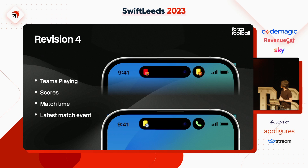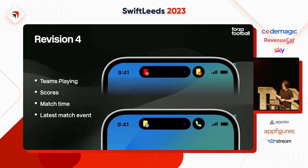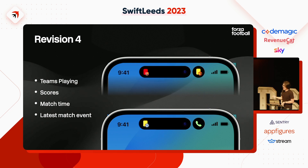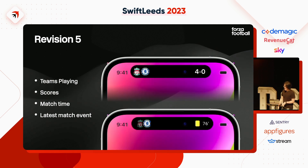Fourth version: we tried something extreme — remove everything and just show the latest match events, since that should be quite interesting. But quickly we found this doesn't work well either, since we cannot show when it happened. For example, a red card — did it happen when the second half just started, or at the 89th minute? That makes a lot of difference, but we can't tell here.